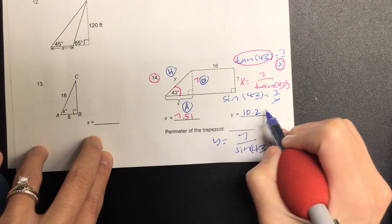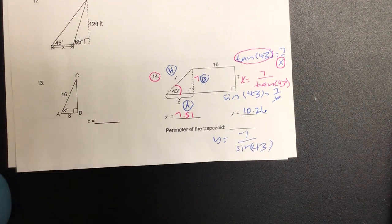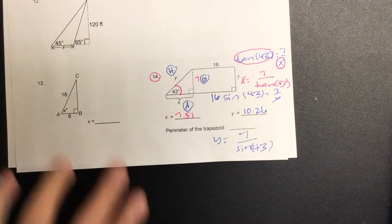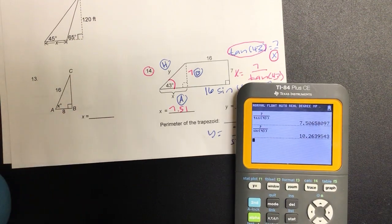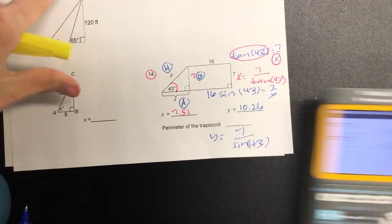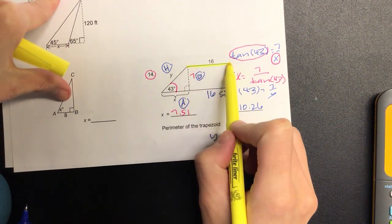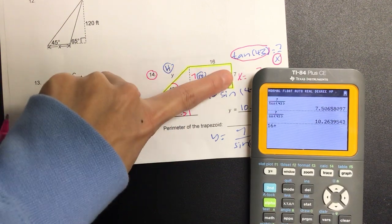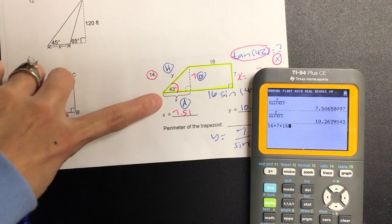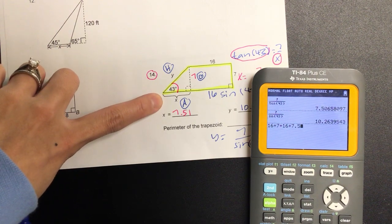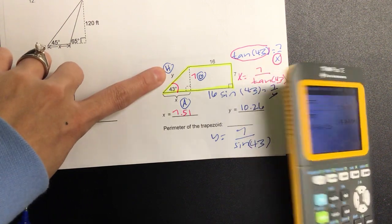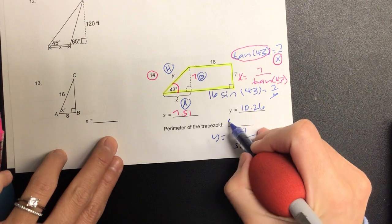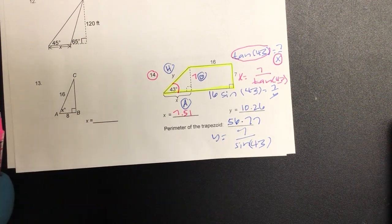Ten point two six. And then it says to find the perimeter. Let's go ahead and write sixteen down here as well. And let's start adding them. When I'm adding the perimeter, it's going to be just a distance around the outer figure. So I'm going to start with the sixteen plus the seven plus another sixteen plus the x, seven point five one, and plus the y, ten point two six. And that's going to give us fifty-six point seven seven.